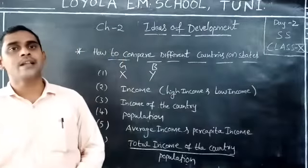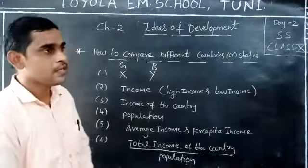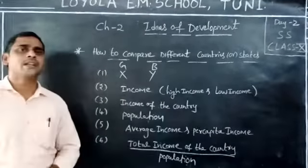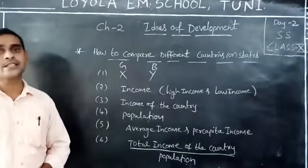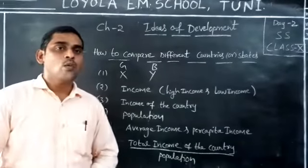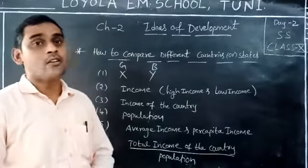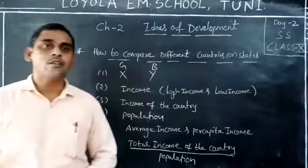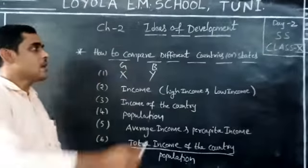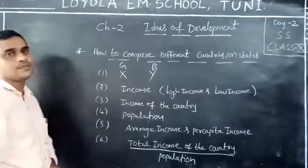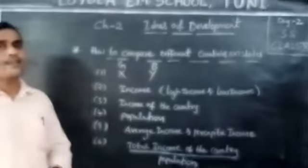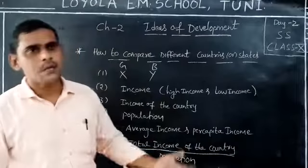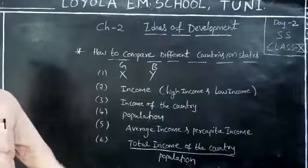To compare countries, we measure some aspects. One such aspect is income. To compare countries or states and say one is developed and one is not developed, all are compared on the basis of income. We take income as one indicator or one aspect when comparing them. Finally, we say some are developed and some are not developed.